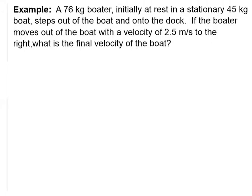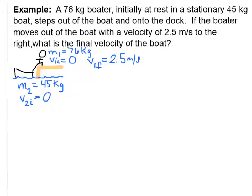Let's try a problem using our conservation of momentum formula. A 76 kg boater, initially at rest in a stationary 45 kg boat, steps out of the boat and onto the dock. If the boater moves out of the boat with a velocity of 2.5 m/s to the right, what is the final velocity of the boat? Let's draw a little diagram and write down what we know. Object 1 is the boater: mass is 76 kg, initial velocity is zero, final velocity is 2.5 m/s to the right. Object 2 is the boat: mass is 45 kg, initial velocity is zero. What will the final velocity of the boat be?